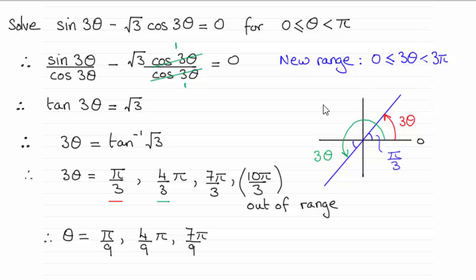And then I come to the quadrant diagram, where we're turning anti-clockwise for positive angles. And we know that we're dealing with the tan of an angle, three theta, being a positive value, root three. So tan is positive in the first quadrant and the third quadrant.